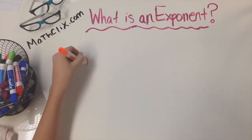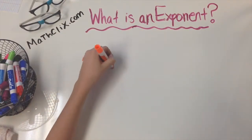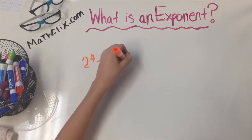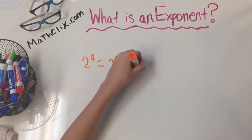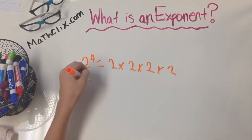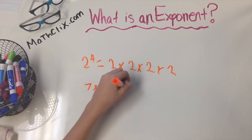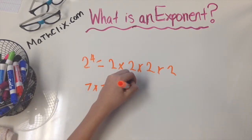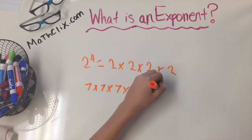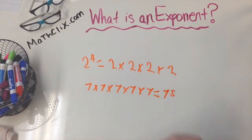Let's look at some examples. Two with the fourth power is the same as saying two times two times two times two. And seven times seven times seven times seven times seven is the same as saying seven with the fifth power.